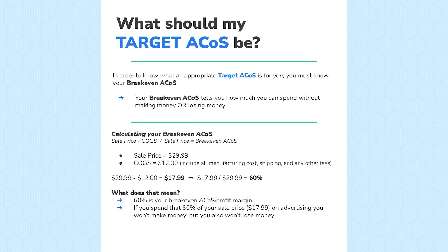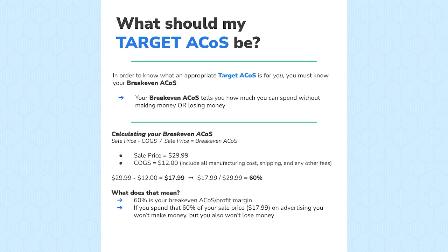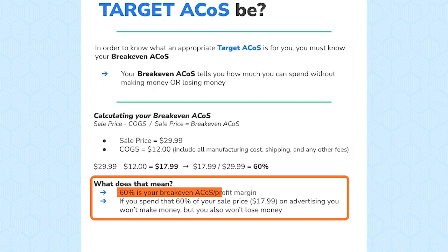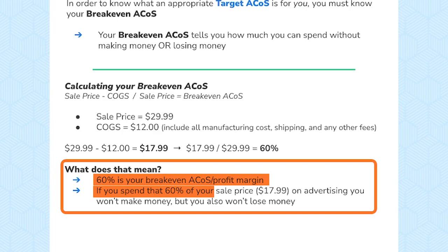Let's say your product costs $29.99 and your COGS is $12 — and you'll want to include all manufacturing costs, shipping, and any other fees you normally accrue in that calculation. So: $29.99 minus $12 equals $17.99. Then $17.99 divided by $29.99 equals 60%. That means 60% is your break-even ACoS — your break-even point for profit margin. If you spend that 60% of your sales price on PPC, you won't make money but you won't lose money.